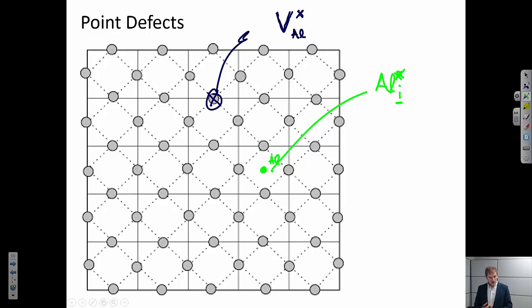The third kind of point defect that we would see would be a substitution. So again, let's say this is a lattice of aluminum atoms. But this atom here is not aluminum. Let's say this is copper. So the notation for this is going to be written as such. So again, a copper atom is sitting on an aluminum site. And the net charge is neutral.